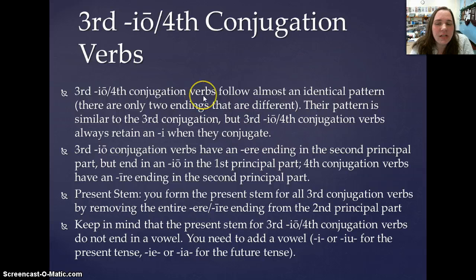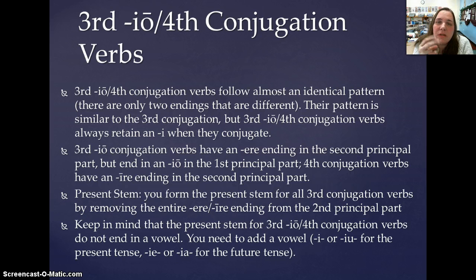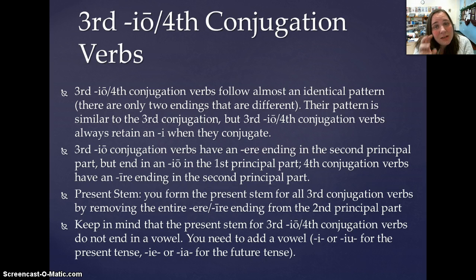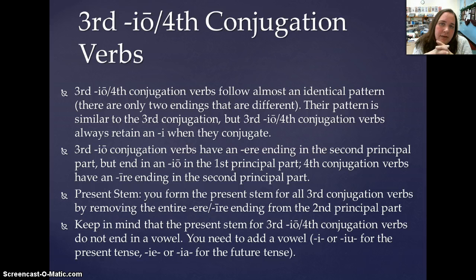Third IO and Fourth Conjugation Verbs follow practically an identical pattern to each other. There are only two times in which a Third IO ending is going to be different from a Fourth Conjugation ending. One of them we'll learn about today, and one of them we'll learn about by the end of the year. Third IO and Fourths follow a very similar pattern to Third Conjugation Verbs, which you just learned.